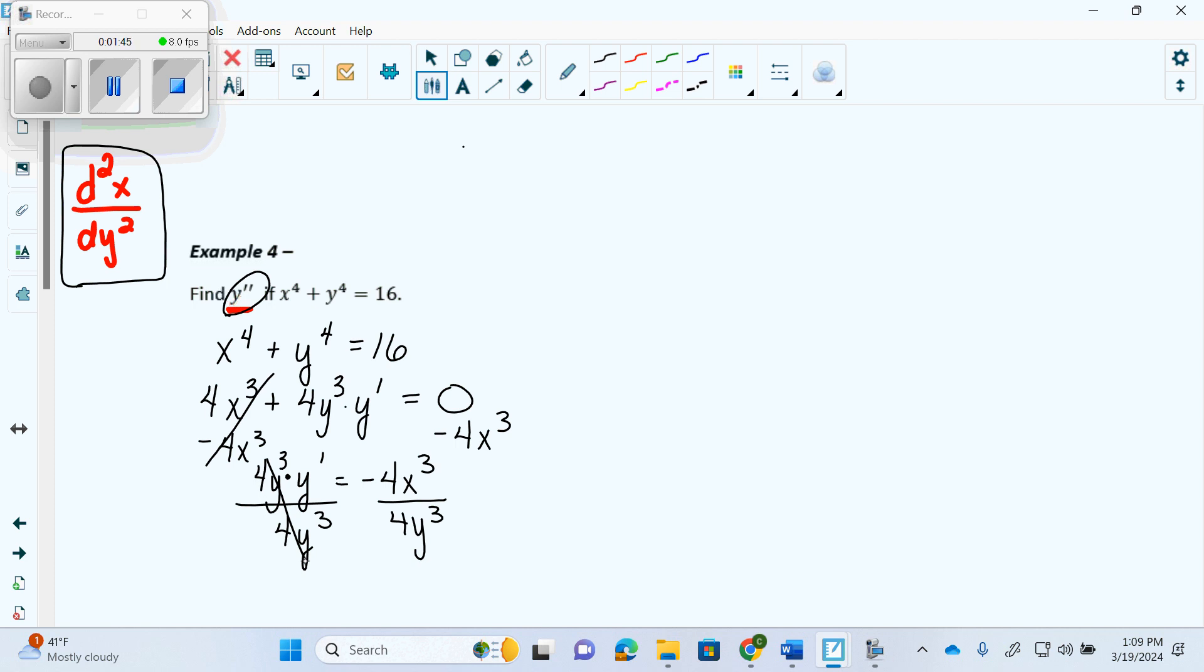And then we get y prime equals, take the 4s out and we're left with negative x cubed over y cubed. And that's what we would have done yesterday.